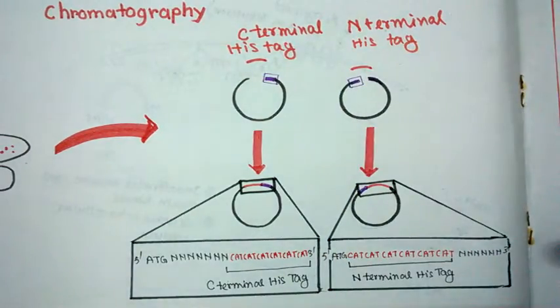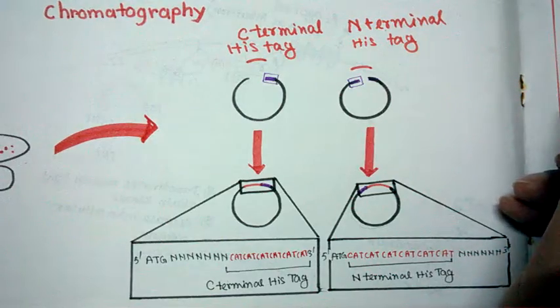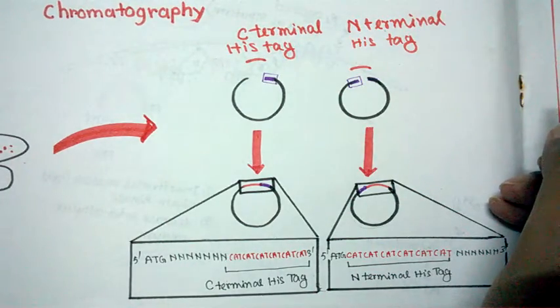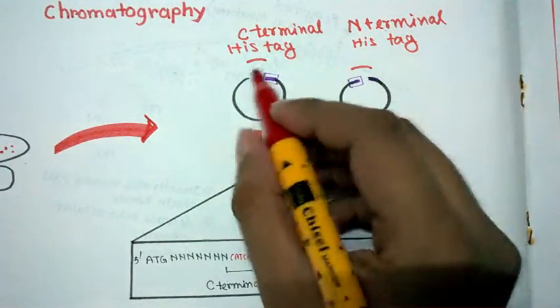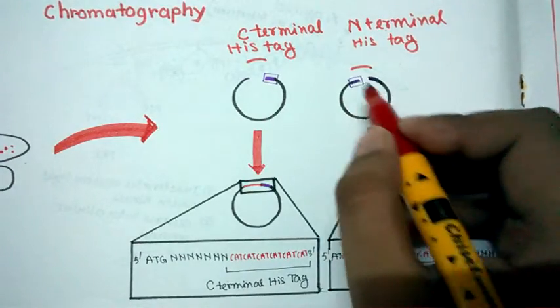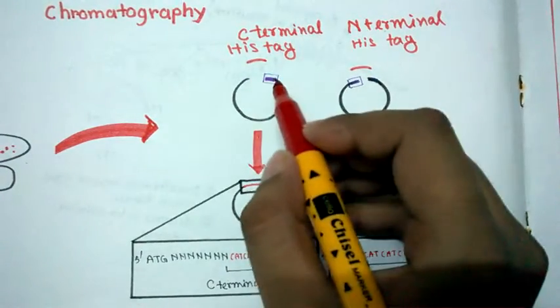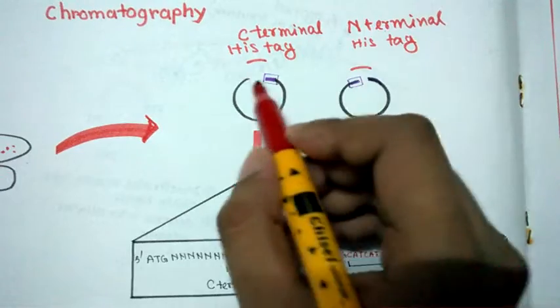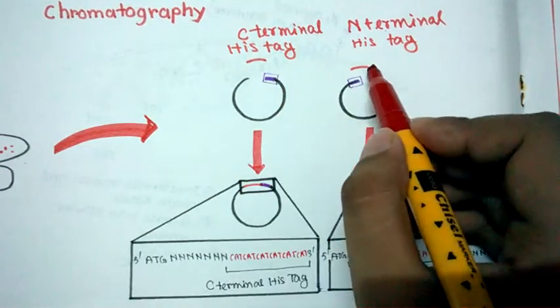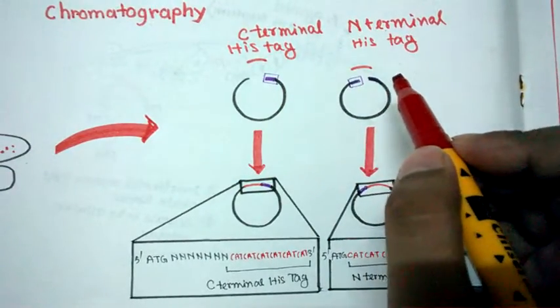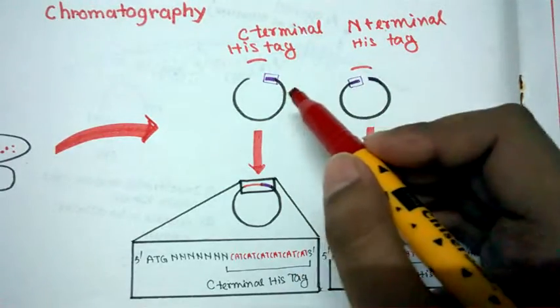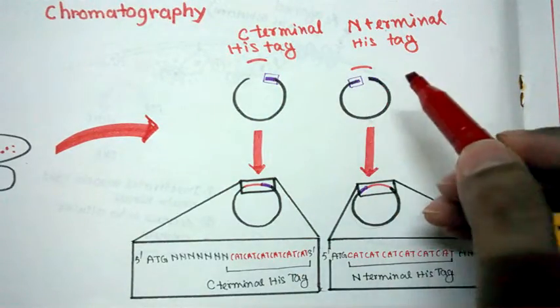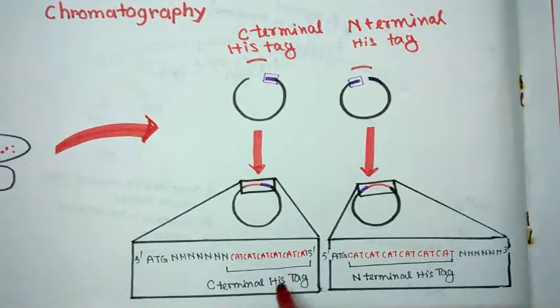So his tag is basically a hexahistidine tag. So this his tag generally comes with the vector. The expression vector has a histidine tag. Here it's denoted in purple. So now we would clone our gene of interest in one of these vectors. Maybe a C-terminal tag, be it an N-terminal tag, that doesn't matter. So here is the sequence corresponding to that C-terminal tag and N-terminal tag.